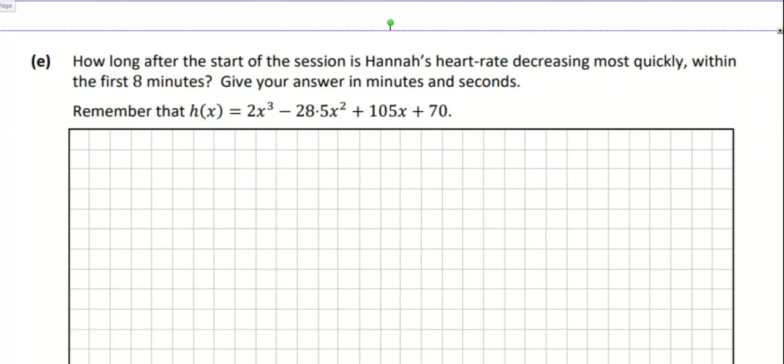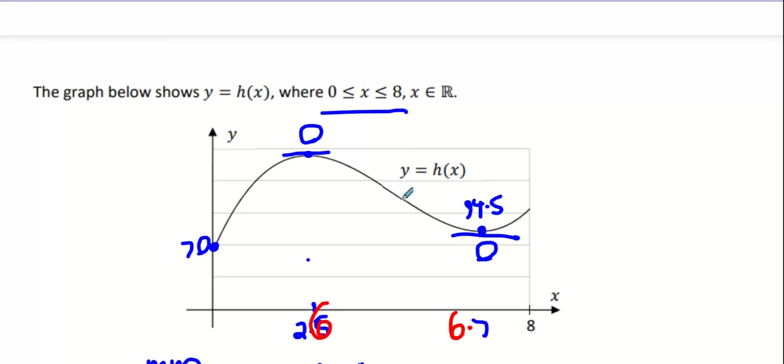Now we're on to the next question. How long after the start of the session is Hannah's heart rate decreasing most quickly within the first 8 minutes? When are you decreasing most quickly? Decreasing most quickly would mean you're on your way down. Decreasing most quickly means your slope is at its steepest. When you go over a hill your slope starts off reasonably shallow and then it gets steeper and steeper until it's at its steepest. But then what happens after that is it starts to get shallower again. So it's actually the point of inflection or the POI is the moment where you're at your steepest. And the point of inflection is actually the second derivative equal to zero.